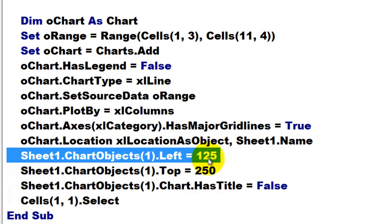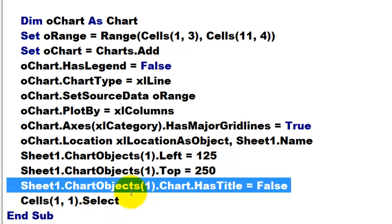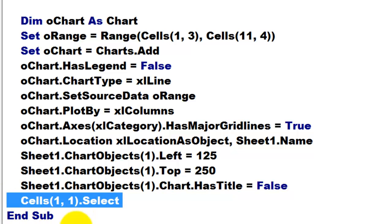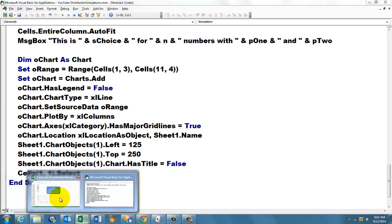The location of that chart is as an object in the same sheet—in which sheet? Sheet1.Name. Make sure that you do the name of that one. Then ChartObject—that is just trial and error. Where do you want that chart? I set the left 125 units, top 250. Does the sheet ChartObject have a title? No. And select cell A1, otherwise the focus is on that chart.